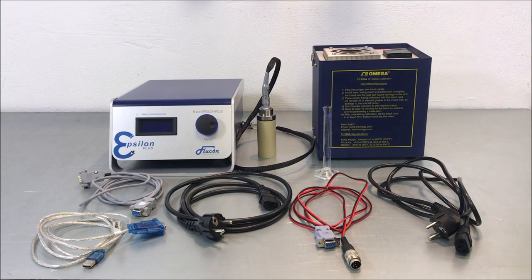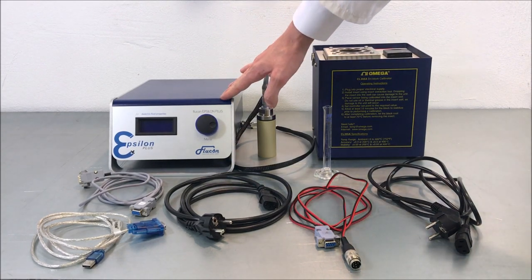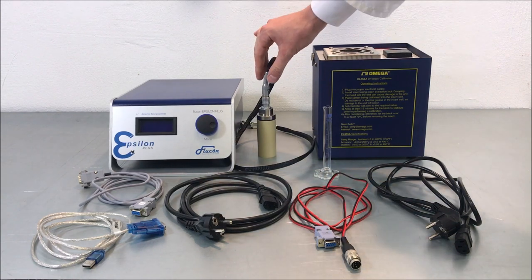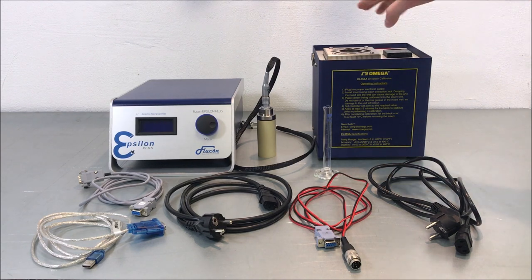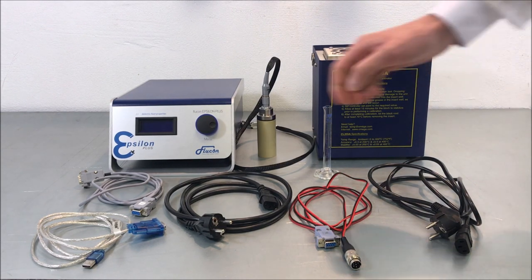The following components are included in the scope of delivery of your Epsilon Plus Dielectricity Meter. First of all, you have your electronic box as well as the sensor with the stainless steel screw-on sample cup and a heat-resistant adapter sleeve. For automatic temperature control of your samples, you have a dry block thermostat.